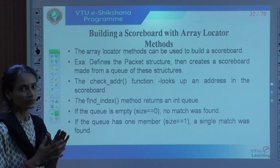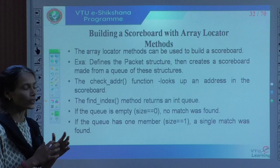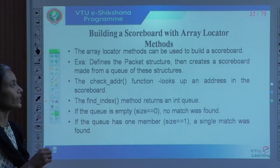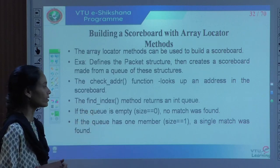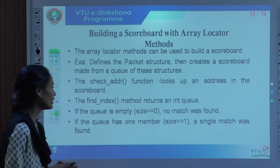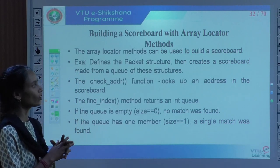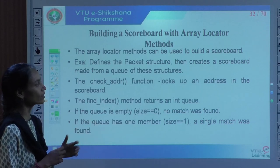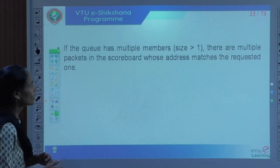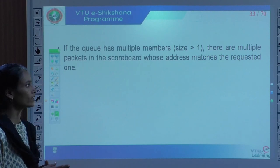We will be declaring every component in the test bench with the help of a structure or a class, and define how exactly the interconnection between those components needs to happen. We can make use of the check_address function, where it looks up the address in the scoreboard. The find_index method returns an integer type queue; if the queue is empty, size equals 0 means no match found; if size equals 1, that indicates a match. If the queue has multiple members (size greater than 1), there are multiple packets in the scoreboard whose address matches the requested one.